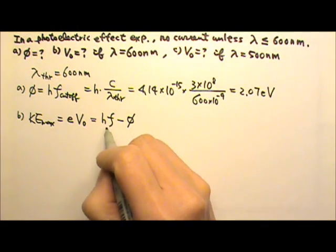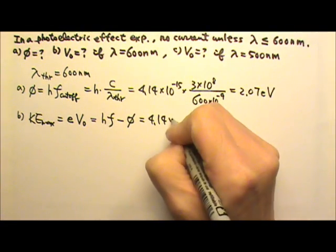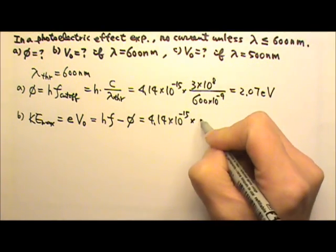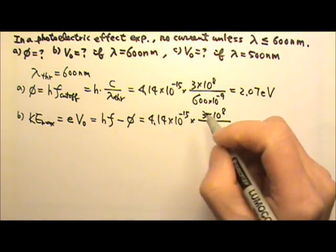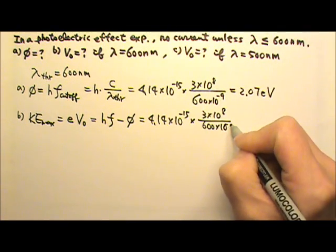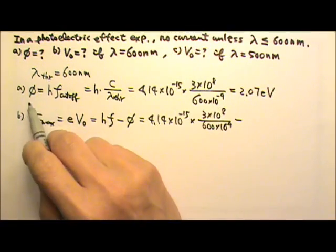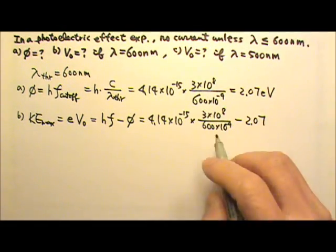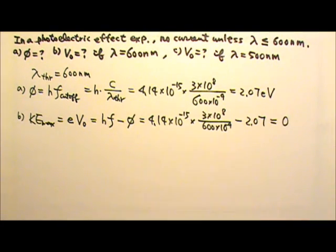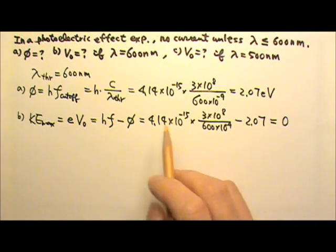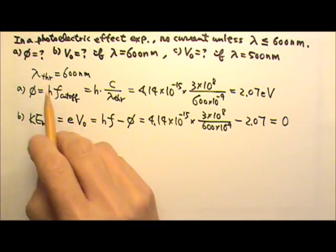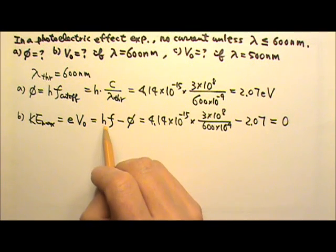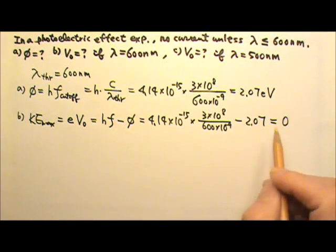Keeping everything in electron volts, h = 4.14 × 10⁻¹⁵, times c / λ with λ = 600 nm, minus the work function of 2.07 eV — this calculation gives 0. We didn't really need to go through that trouble, because at 600 nm, that is the threshold wavelength. This means this frequency is the cutoff frequency, so h times the cutoff frequency equals the work function, and hf minus the work function equals zero. The stopping voltage at 600 nm is therefore 0 volts.